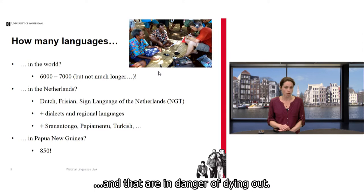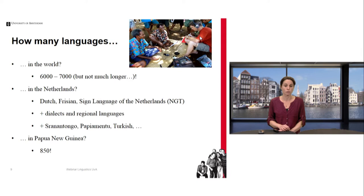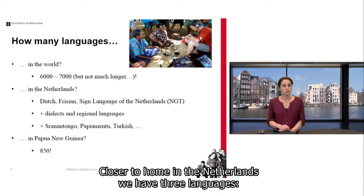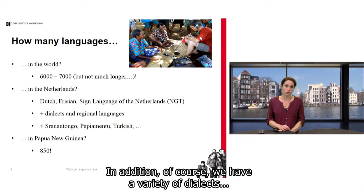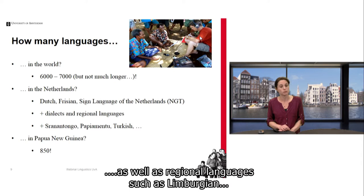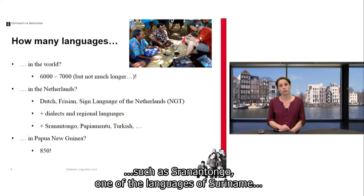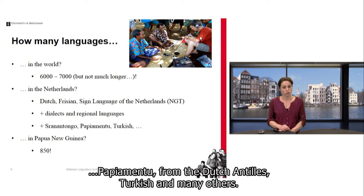Here on the slide you see an example of a colleague working on a language of Vanuatu in the Pacific. Closer to home in the Netherlands, we have three languages: Dutch, Frisian, and Sign Language of the Netherlands, or NGT, the language of the deaf community. In addition, we have a variety of dialects, regional languages such as Limburgian, and a number of languages associated with immigrant groups such as Sranantongo, one of the languages of Suriname, Papiamentu from the Dutch Antilles, Turkish, and many others.